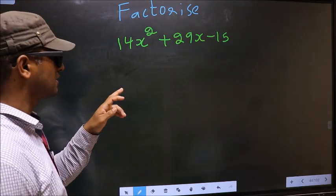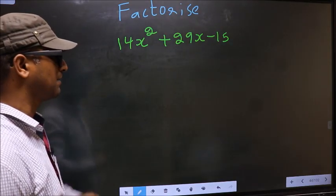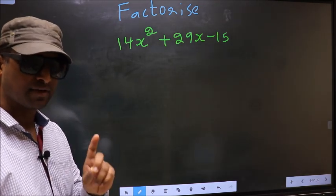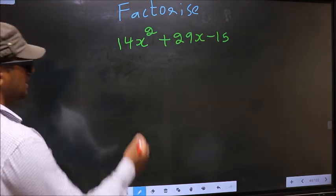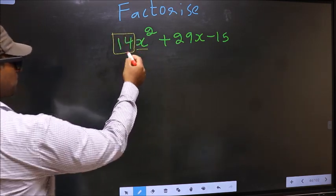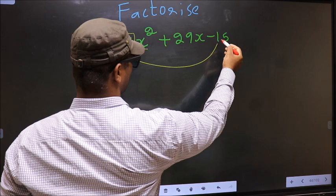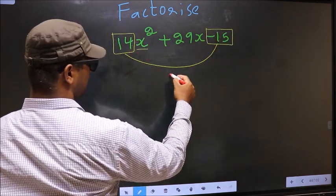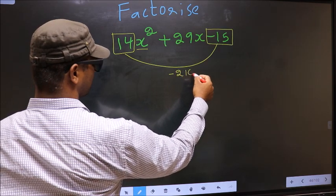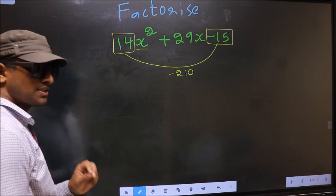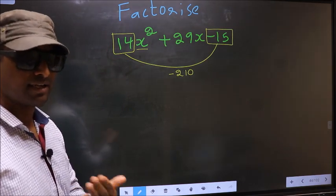Factorize 14x² + 29x - 15. To factorize, step 1: the coefficient of x², which is 14, should be multiplied by the constant, which is -15. So 14 × -15 = -210. This is your step 1.